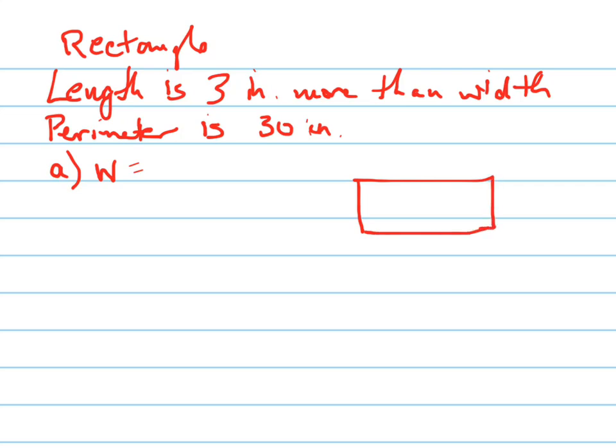The length is 3 more than the width. So here's your width, and the length equals 3 inches more — so it would be 3 plus the width. The first thing they want you to do is define the variable for the width, so we're going to define the variable to be W.